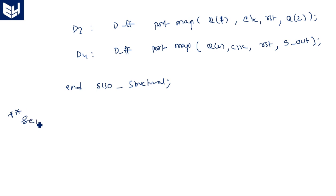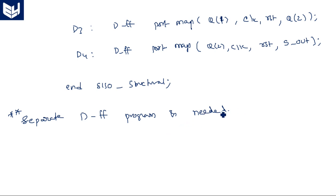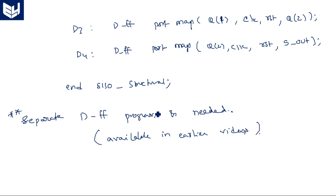End architecture SISO_structural. Important note: a separate D flip-flop program is needed and must be written first. It is available in the earlier videos. I hope you understand how to write the VHDL program in the structural style for the serial in serial out shift register. In the next class I will explain how to write it in the behavioral model.